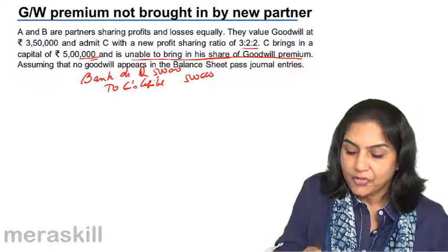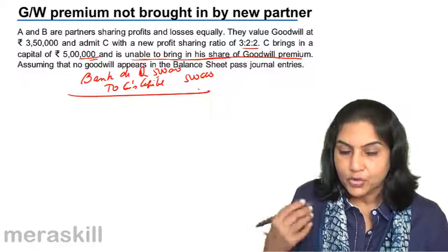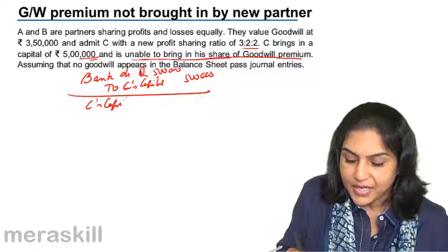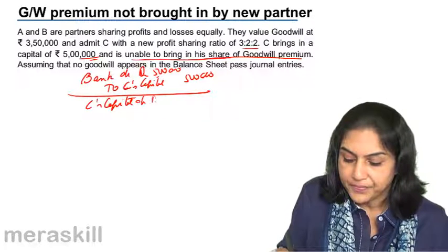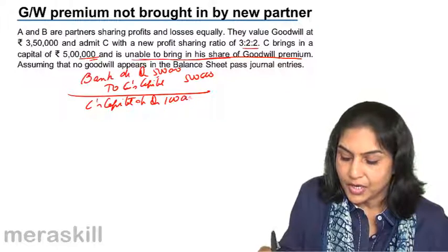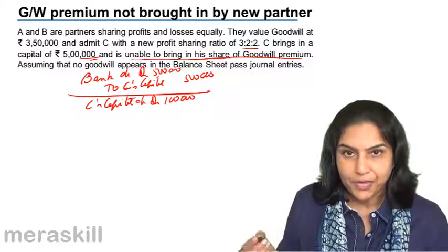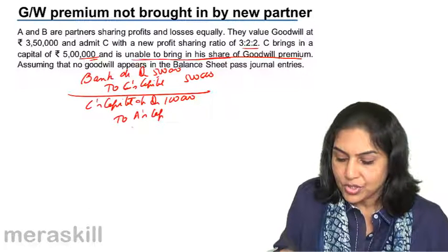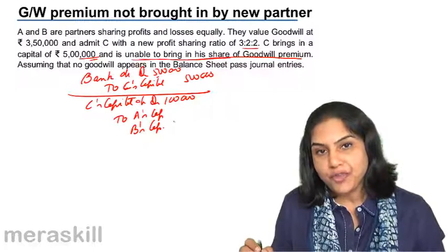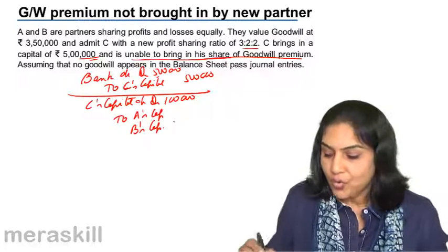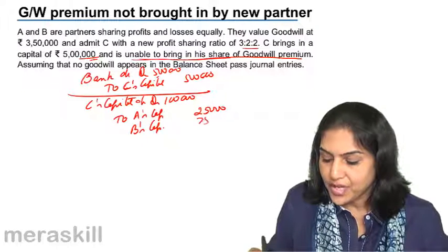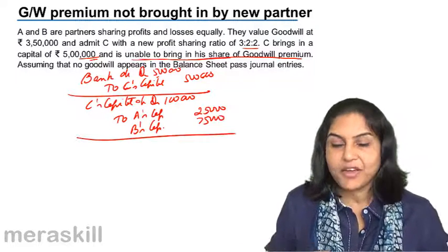Next, for adjustment of the goodwill premium, though money has not been brought in, we will say C's Capital Account debit. His share of goodwill premium is 1,00,000 — to A's Capital Account and to B's Capital Account in the ratio of sacrifice. The sacrificing ratio is 1:3, so 25,000 to A and 75,000 to B.